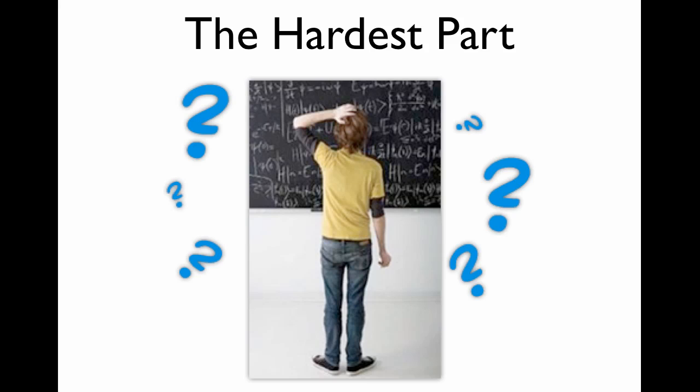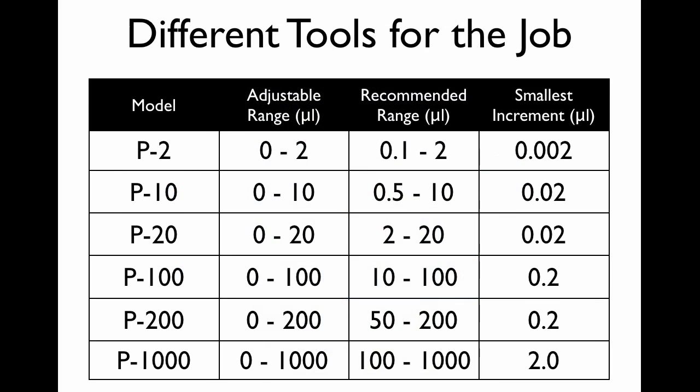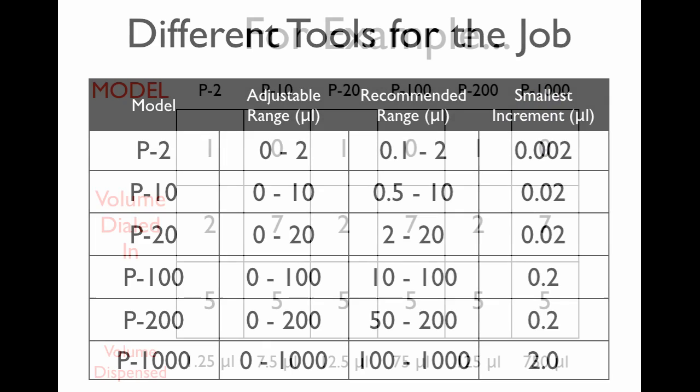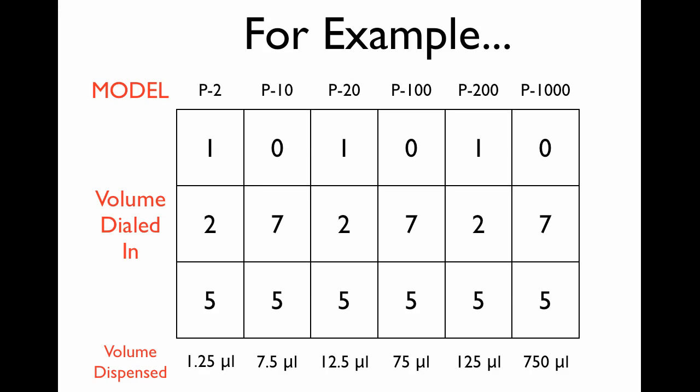The hardest part of using a micropipetter is really knowing which pipetter to use and what the volume is that you're going to dial in. So there are a variety of models that will help you to dispense the volumes that you want. But you've got to pay attention to what you're using and how you dial them in. So this gives you the adjustable range of each of the models, the recommended range. In other words, this is the column that shows with high accuracy what you can actually pipette. And then the smallest increment here that you can actually adjust to. Now, I know this is confusing, but you might want to spend some time looking at this and pressing pause so that you understand what this actually means.